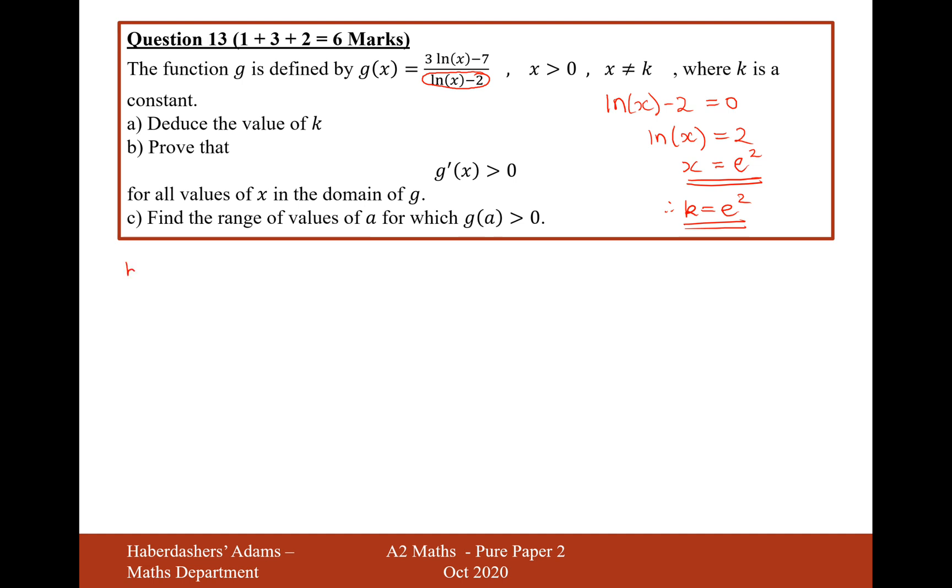Now moving on to part b, prove that g dash of x is greater than 0. So let's do the quotient rule there. If we define the top as u and the bottom as v, then it's u dash v minus v dash u over v squared. So let's write it out then. So g dash of x equals the top differentiated first, that's 3 over x, times by the denominator, ln(x) minus 2.